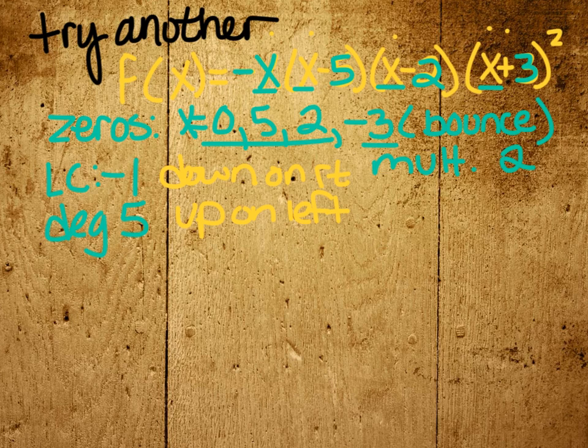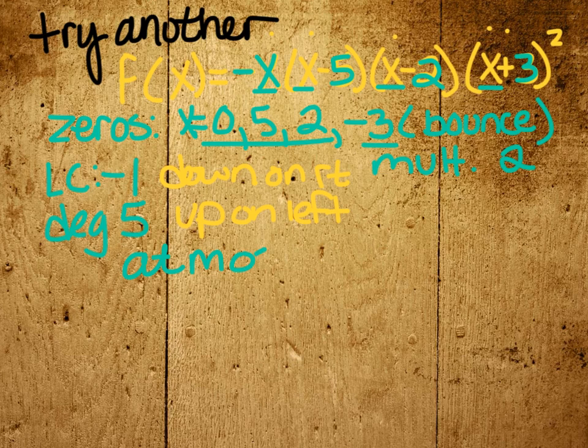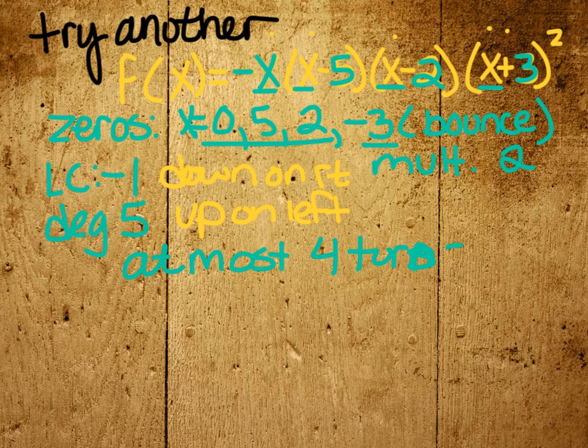Another thing that I know is if this is fifth degree, it's going to have at most 4 turns. It could have less than that, but at most 4 turns. All right, so all those things that I know about it, I'm going to try, I'm going to pull off the graph now.